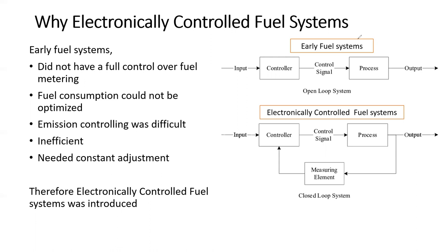The problem here is we have no idea what is happening inside the combustion chamber — we never measure it. If we put around 5 cubic centimeters of petrol into the combustion chamber, we never considered whether those 5cc were actually combusted or if most of it is coming out. That means it's not an effective system. People found the problems with these systems in the early 1950s because of emission issues.